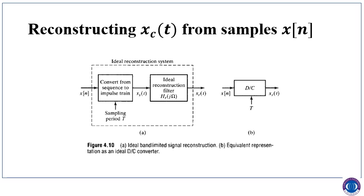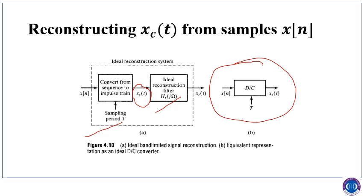This is again the block diagram of the reconstruction filter. The first stage converts the sequence to impulses by multiplying with a periodic impulse train. Once we have the sampled impulses, we convolve with the impulse response of the ideal reconstruction filter. In shorter form, a D-to-C converter simply requires the sampling time T as input and produces the reconstructed signal.